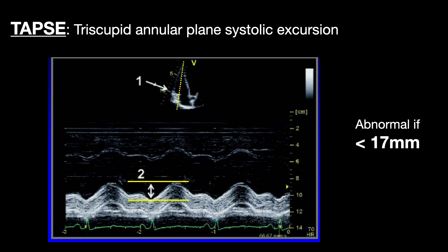Now we'll move to regional measures. TAPSI — tricuspid annular plane systolic excursion — is a regional measure of RV systolic function. The right ventricle has superficial circumferential muscle fibers responsible for inward movement, and inner longitudinal fibers that result in base-to-apex contraction. It's this base-to-apex shortening that assumes the greater role in RV emptying, and that's what TAPSI captures. TAPSI represents the longitudinal function of the RV, assuming that basal segment displacement in the apical four-chamber view is representative of the entire RV.